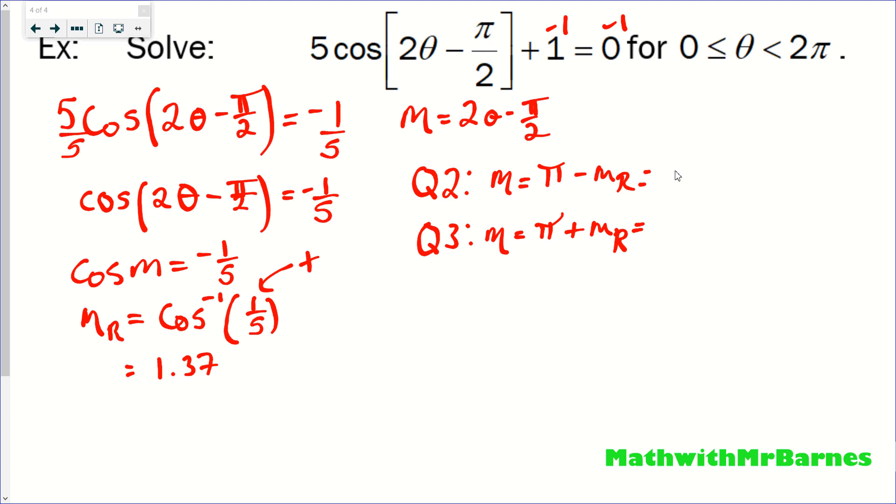So we got pi minus 1.37, and then pi plus 1.37. So I'll just quickly do those on my calculator. So pi minus 1.37 is going to give us 1.77, and then pi plus 1.37 is going to give us 4.51. So that's my two values of M.